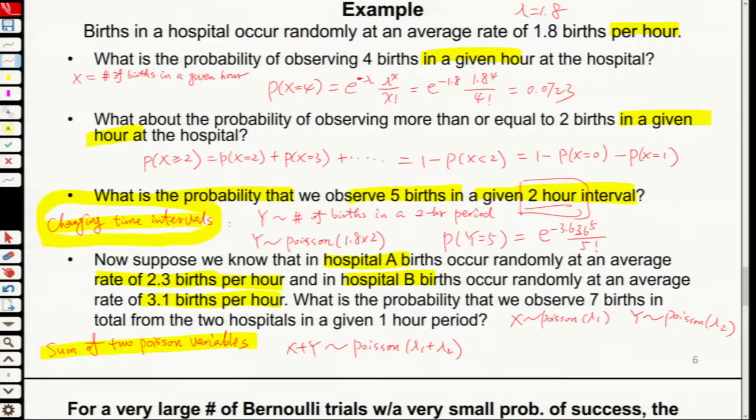In this case, lambda 1 plus lambda 2 is 5.4. So what's the probability? The probability that we're going to observe X plus Y equals 7 will equal exponential minus 5.4, and 5.4 to the power 7 divided by 7 factorial. This will be the probability to observe a total of 7 births from two hospitals.